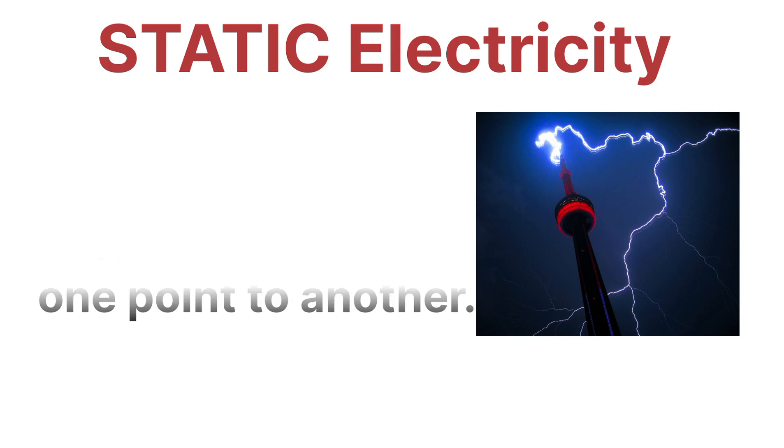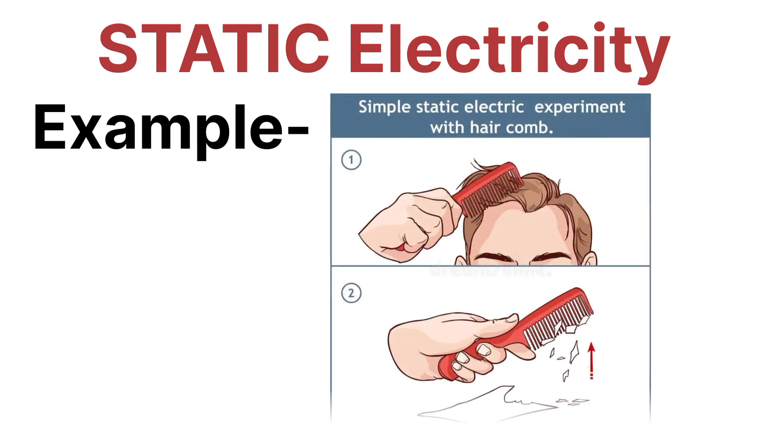Now let's see what is the example of static electricity. When a pen is rubbed with hair and then brought near to paper, the paper gets attracted to the pen. That is a simple and very important example of static electricity.